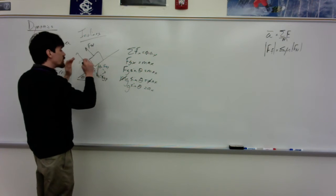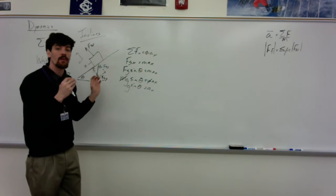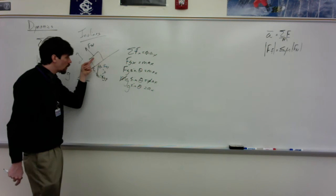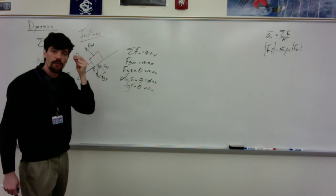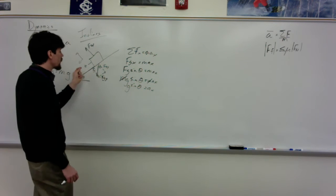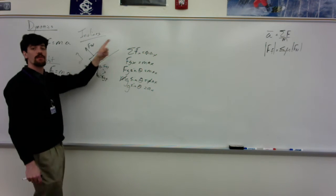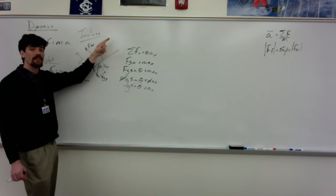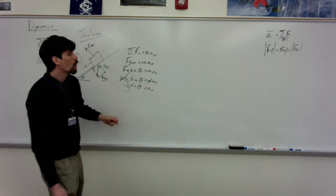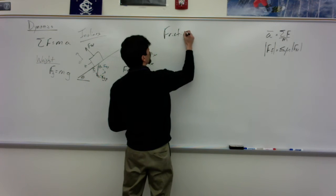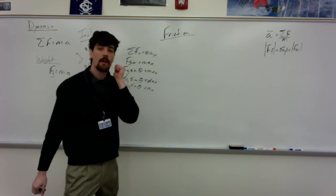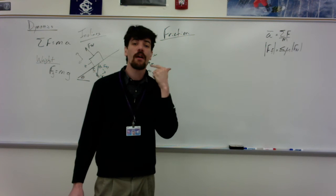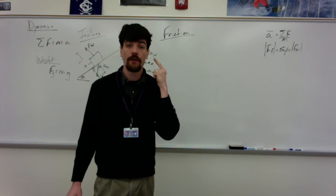If we have a force going against motion, that is the force of friction. Force friction could be down the plane if an object is pushed up the plane, or up the plane if it's accelerating downward. Friction is simply based on two things: the relative smoothness between the two materials — referenced as the coefficient of friction — and the normal force provided by the surface.